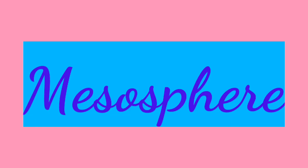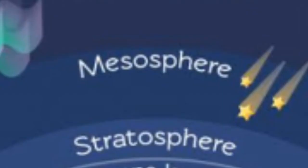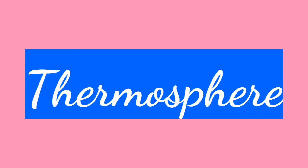The third layer is mesosphere. Meso means middle. Meteorites and small rocks moving in space burn out here. Is layer mein, mesosphere mein, woh burn ho jaate hai. Thus, they do not reach the earth.